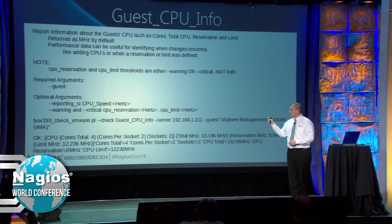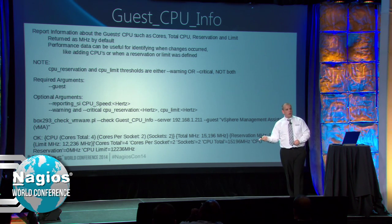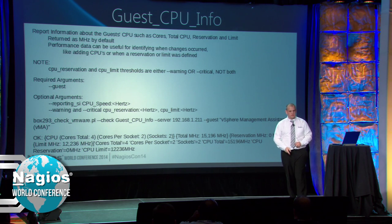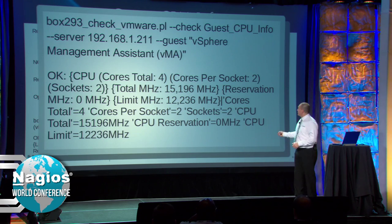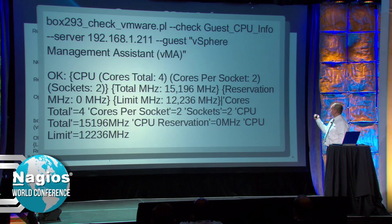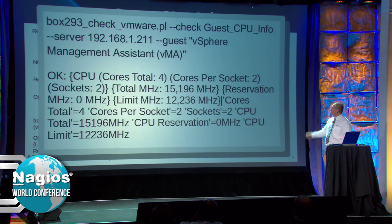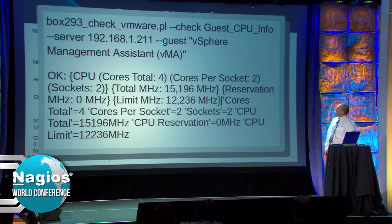In this example, I had four cores in total, two sockets, two cores per socket, the total megahertz, and no reservation happening, no limit. Guest CPU usage - this is more about what's happening on the guest. This will tell you the actual CPU speed and the ready time, and you can alert on these variables. You can alert if there's too much CPU being used, and whether you report free or used - options are there.